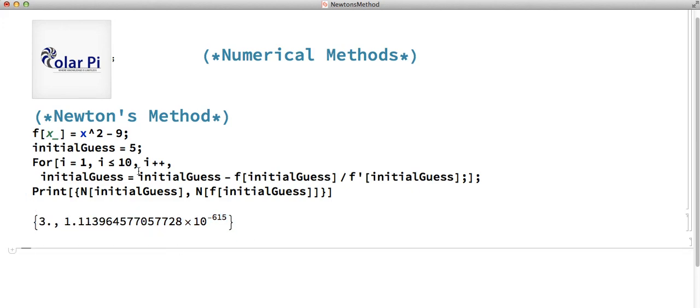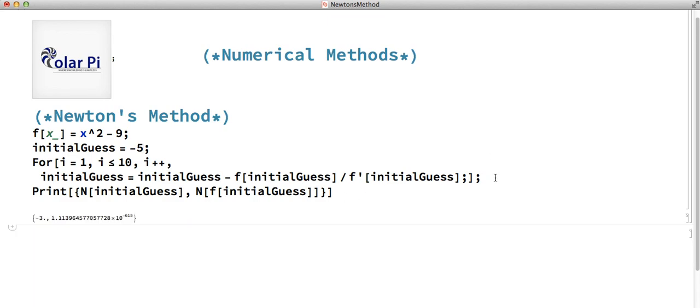Now I had said that if our initial guess was closer to the other zero of this function, which would be negative three, then this estimate should be negative three instead of positive three. So let's make our initial guess exactly that, which is closer to negative three. So let's say it's negative five. Then what do we get now? There you go. As expected. Negative three.